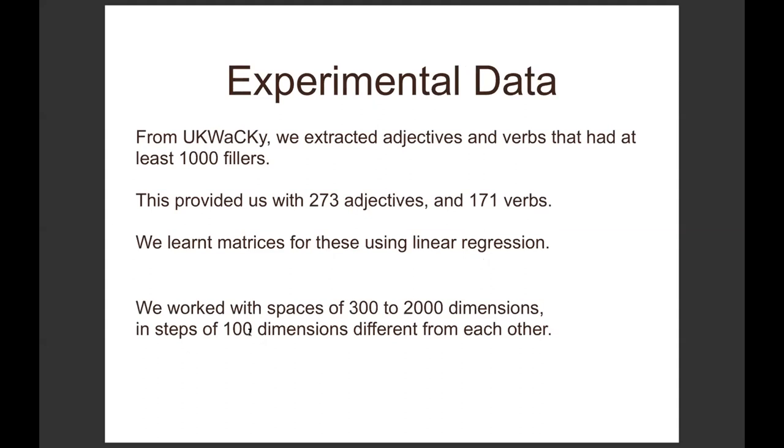What is our data? 273 adjectives, 171 verbs, built using linear regression. These were the adjectives and verbs that had at least a thousand fillers in the ukWaC. We worked with 18 spaces of 300 to 2000 dimensions with steps of 100: 300 dimension, 400 dimension, 500 dimension, and so on.